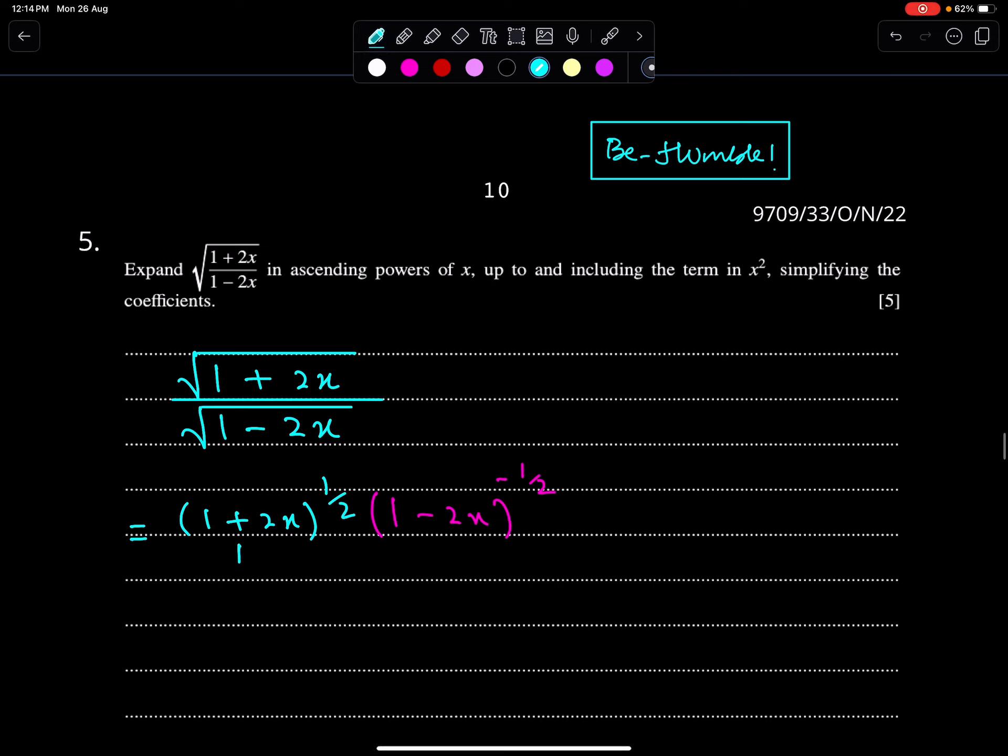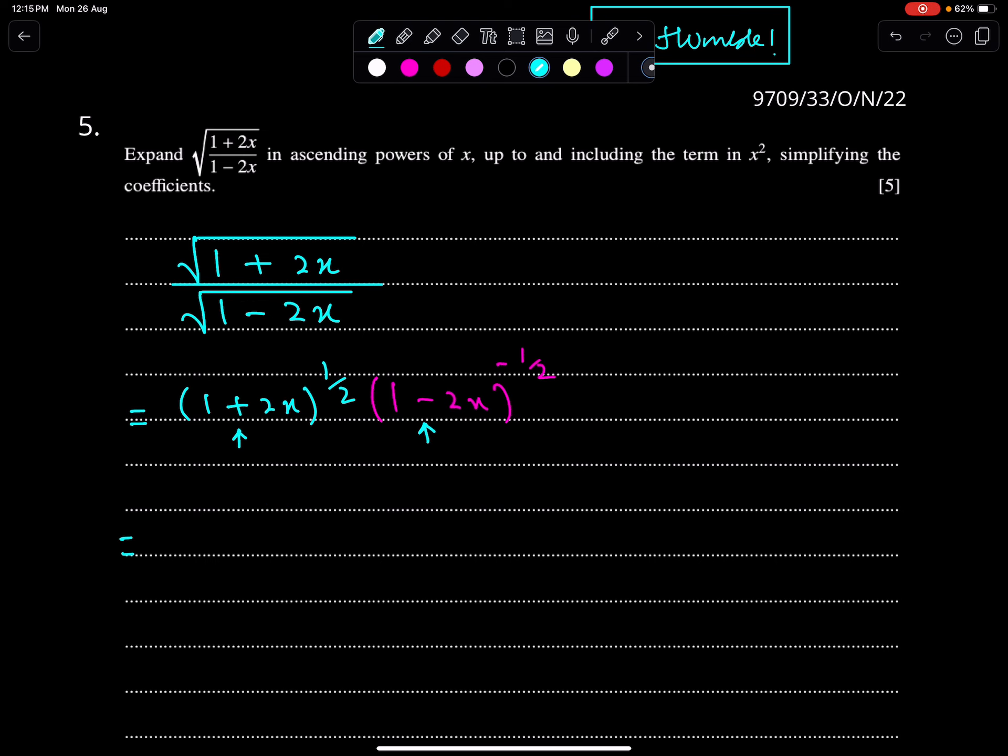When we expand this, all signs are positive. When we expand this, signs are alternate. So, 1 plus n which is 1/2 over 1 factorial, second term 2x to power 1. Then n(n-1), 1/2 minus 1 is minus 1/2 over 2 factorial, and the second term to the power 2.